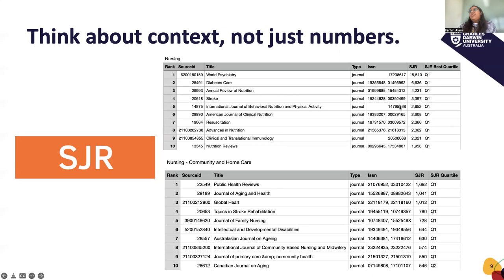The scores for journals in sub-disciplines are naturally going to be lower because you're looking at a smaller, more specialist grouping of research. If you look at the scores alone — comparing 15.5 to 1.6 — it's not going to tell much of a story. You might think those journals are lower impact. However, both are Q1 journals, which means they're in the top 25% of their field and sub-discipline respectively.